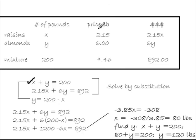The second equation comes from the third column, which is 2.15X. That's the money taken in from the raisins, plus 6Y, which is the money taken in from the almonds, is equal to a total of $892.